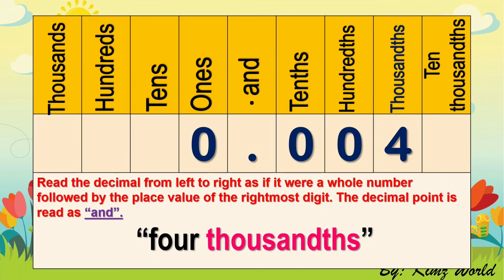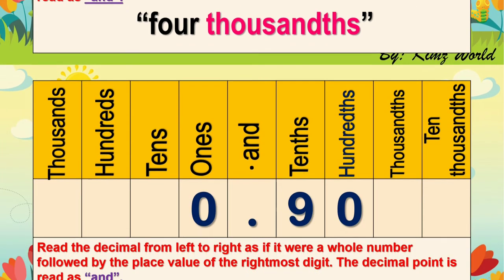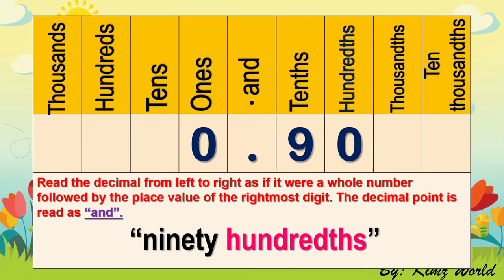Read the number. We only have 4, so say the place value of digit 4 — it's 4 thousandths. Again, 4 thousandths. Moving on to the next number: 90 hundredths. Again, 90 hundredths.